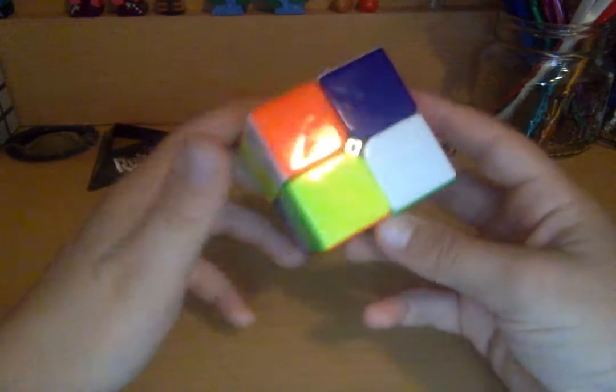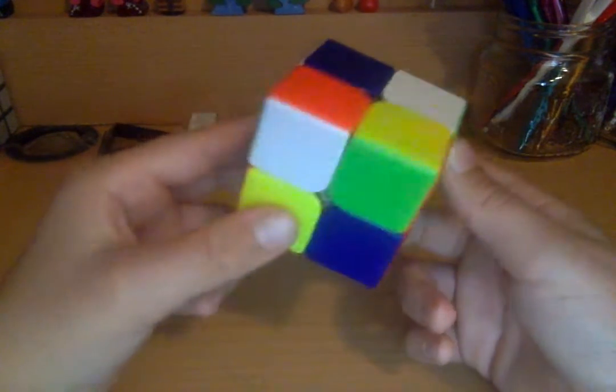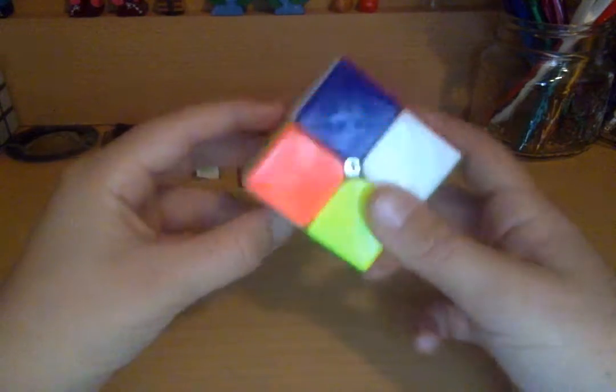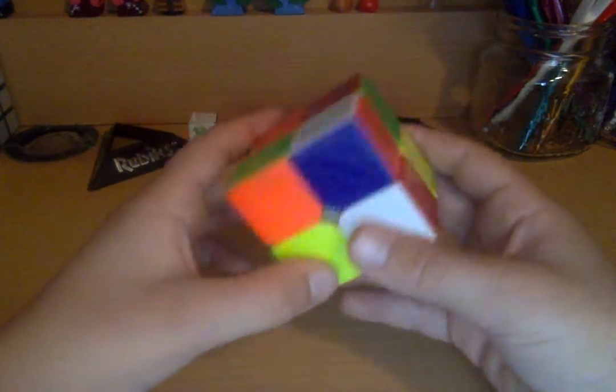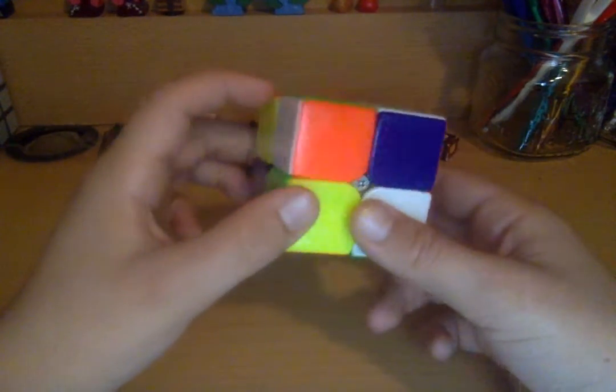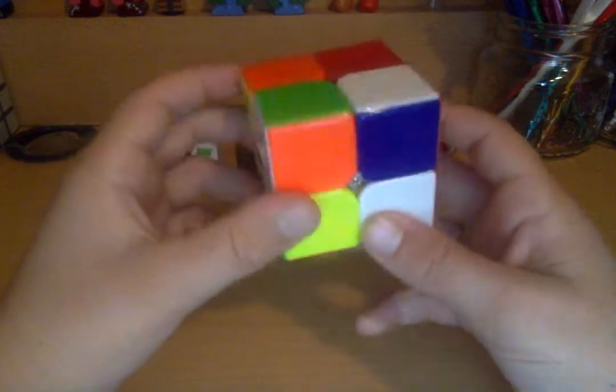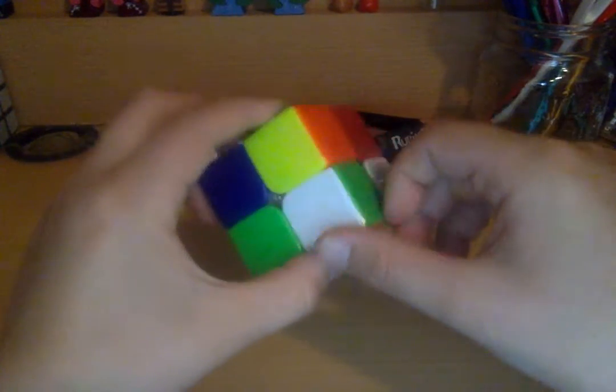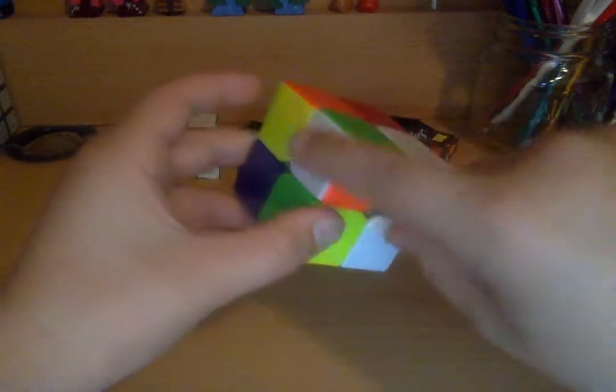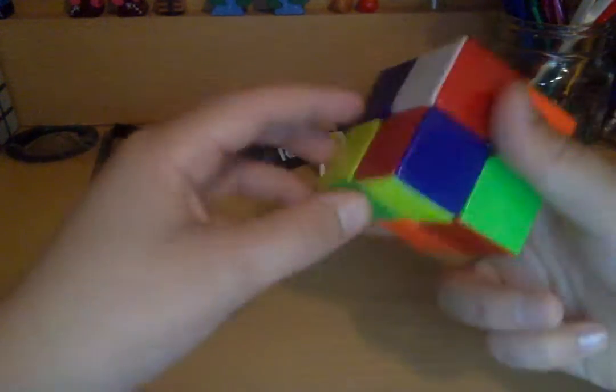So the first thing you're going to want to do is look at the cube and find all the white pieces—white, white, white, white.